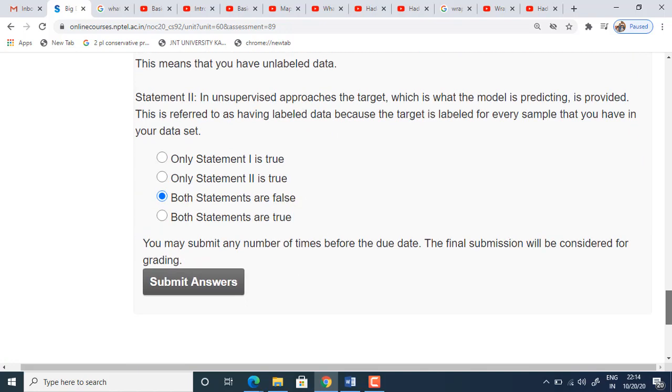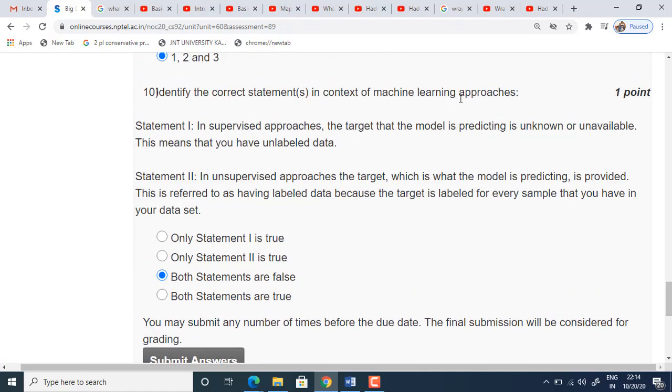Coming to tenth one, the last one. Identify the correct statements in context of machine learning approaches. In statement one, supervised approaches, the target that the model is predicting is unknown or unavailable. This means that you have unlabeled data. Supervised means we should be usually getting the, I mean, the data will be labeled data. So statement one is false. In unsupervised, the data will be unlabeled, but here they have given us labeled. Actually they have reversed the statements. So supervised means we should get the labeled data, unsupervised means unlabeled data. So both statements are false. The appropriate answer is third option.